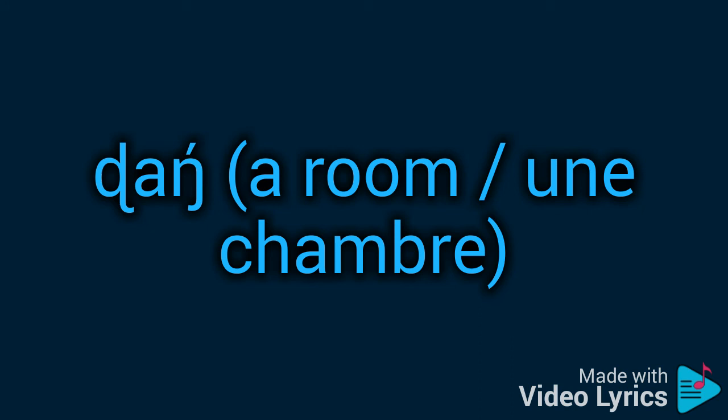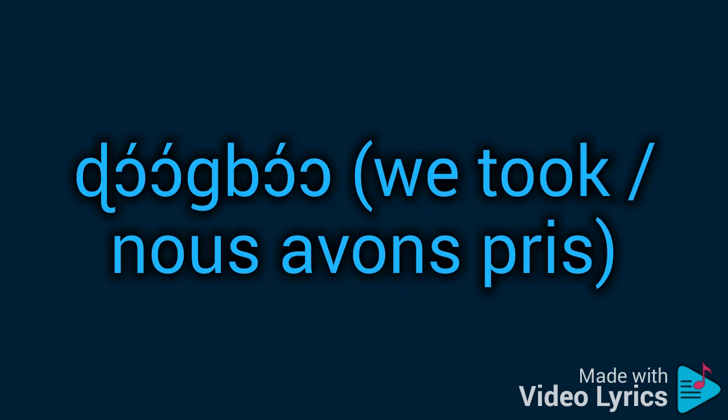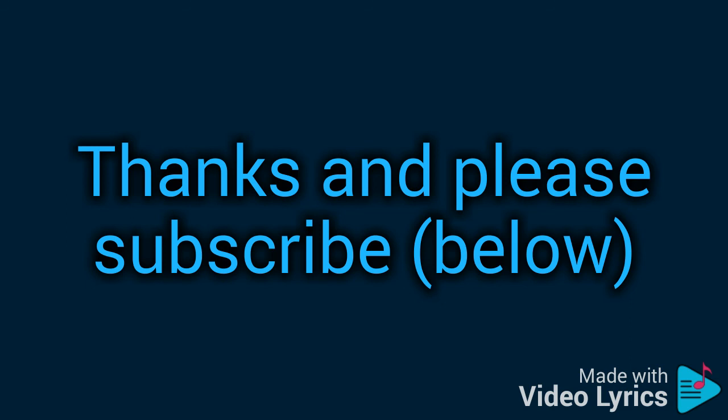This additional word is pronounced 'down', 'down'. The tone is on the last sound — 'down'. The first syllable has a low tone. If you can't see any tone mark, it means it is low tone. It means 'a room' in English and 'une chambre' in French. The last word is 'do-o-bo', 'do-o-bo'. The tone is on the three first syllables and it means 'we took' in English and 'nous avons pris' in French. Thanks for watching, and we encourage you to click the subscribe button below.